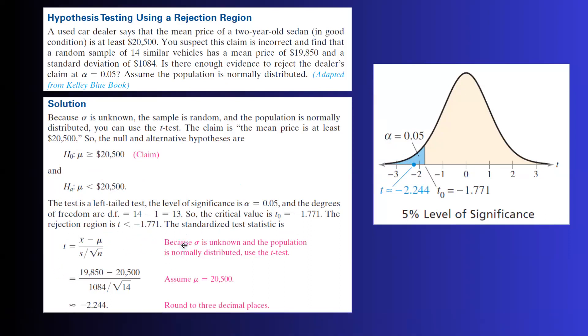So we're going to find the standardized test statistic, which is t equals x-bar minus mu divided by s over square root of n. x-bar is the sample mean, which is what you calculated, 19,850.